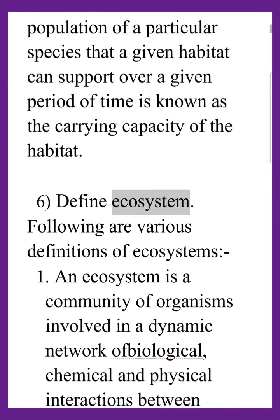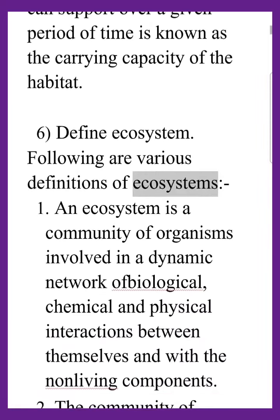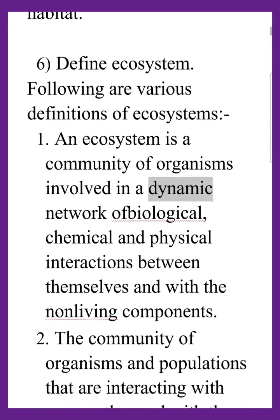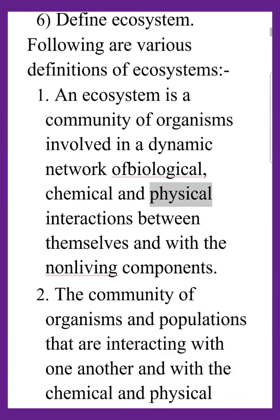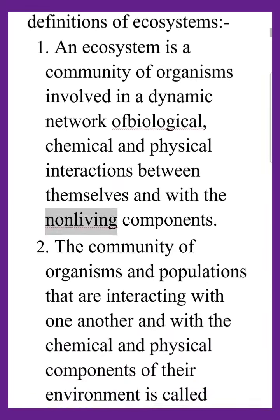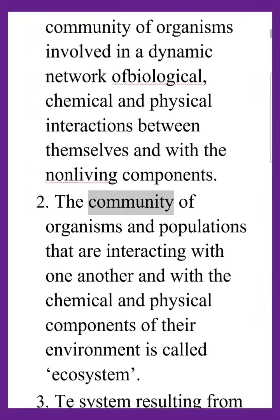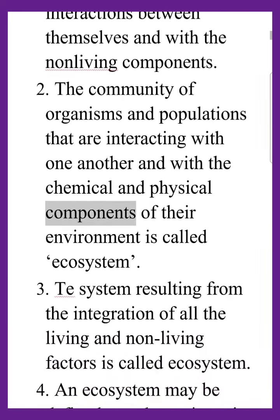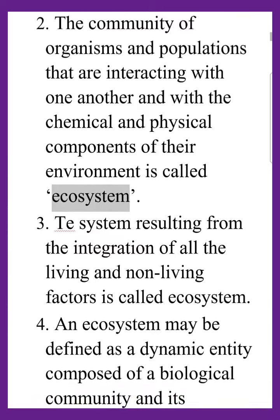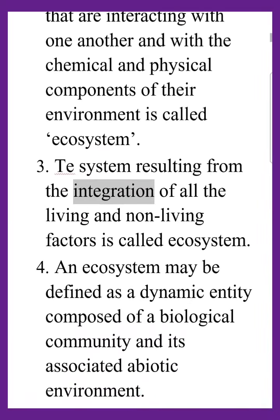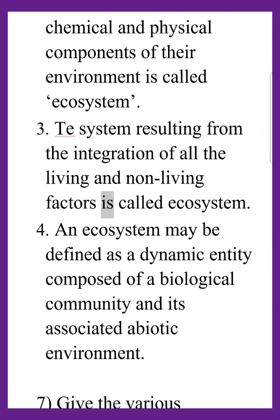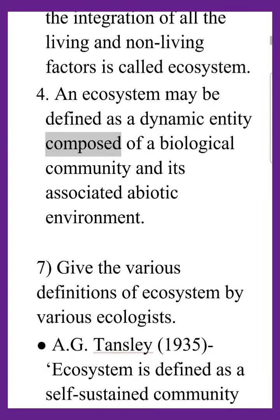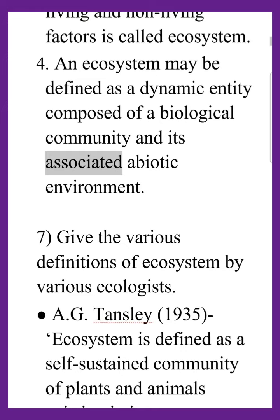Define ecosystem. An ecosystem is a community of organisms involved in a dynamic network of biological, chemical, and physical interactions between themselves and with the non-living components. The community of organisms and populations that are interacting with one another and with the chemical and physical components of their environment is called an ecosystem. An ecosystem may also be defined as a dynamic entity composed of a biological community and its associated abiotic environment.